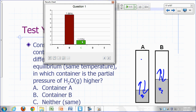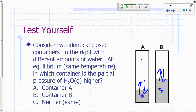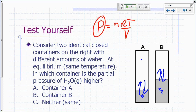The correct answer is C. In container A you have more molecules of water in the vapor than in container B. From the ideal gas law, PV = nRT, so P = nRT/V. If you're going to have the same pressure, that means you have the same concentration. Since container A has a bigger gas volume, it has more moles of water vapor — that's how it achieves the same partial pressure as container B.